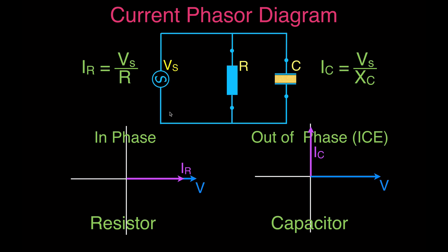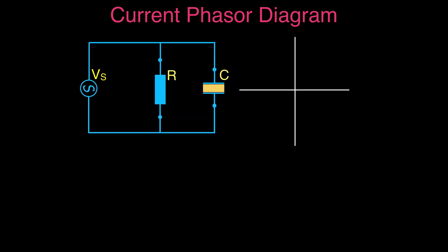Now let's see how we calculate the current through our parallel RC circuit, combining both of those things together — the in-phase and out-of-phase components. We're going to add them up vectorially. We draw the vector for the voltage on the positive x-axis, then the current through the resistor, and then the current through the capacitor, which is 90 degrees out of phase.